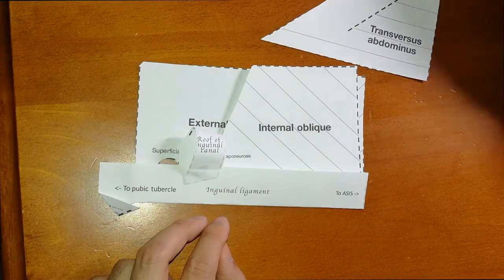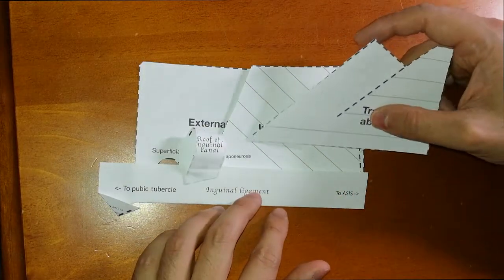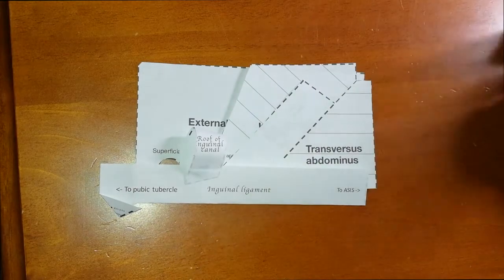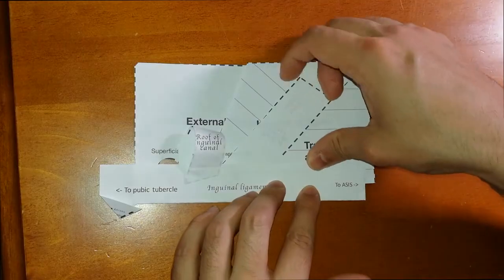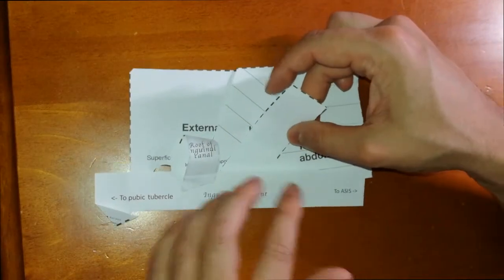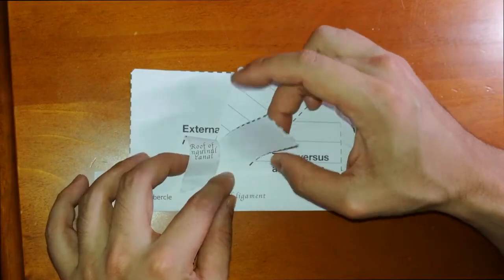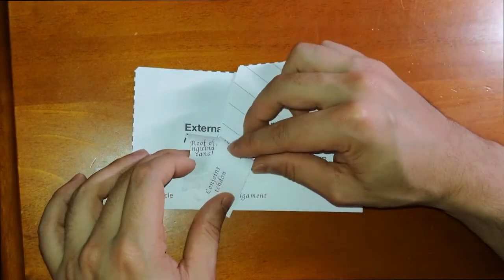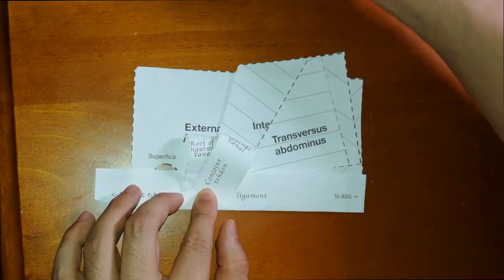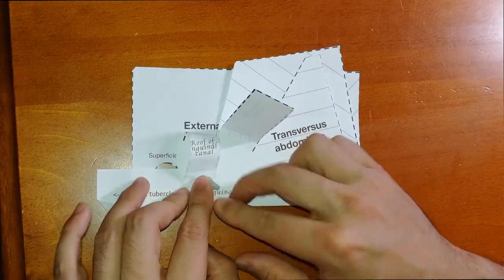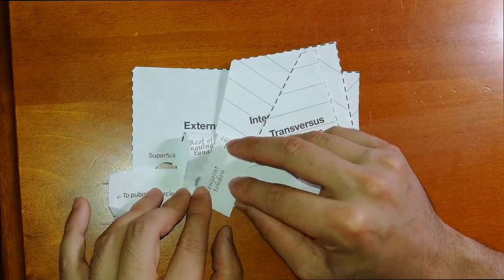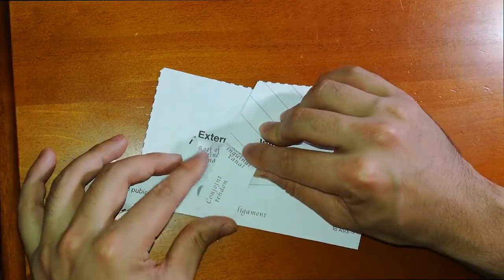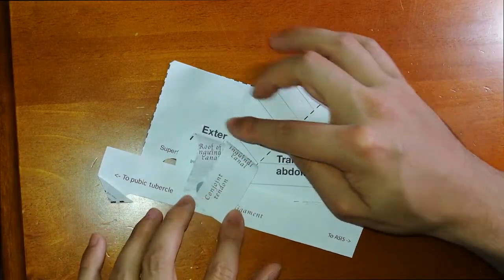Now the next part is the transversus abdominis. Once again, the more medial fibers of the transversus abdominis reflect across and join with the fibers of the internal oblique to form the conjoint tendon here. I'll get another piece of blu-tack and join that there to form the conjoint tendon, and that helps form the inguinal canal, the roof as well.